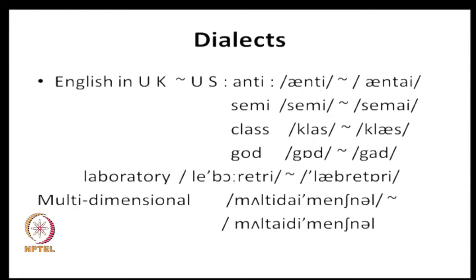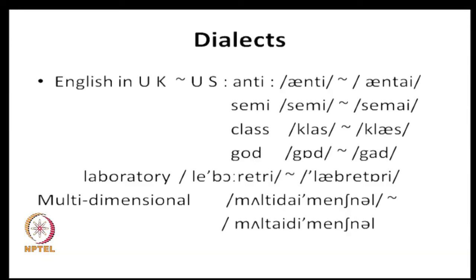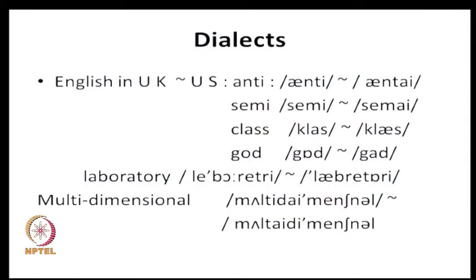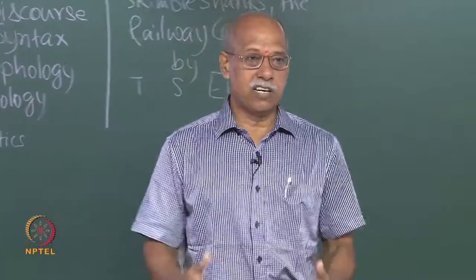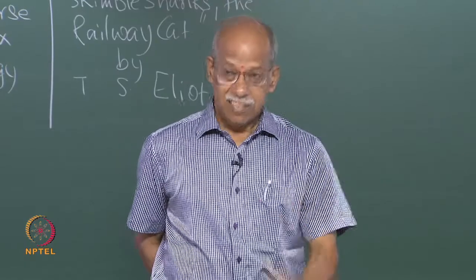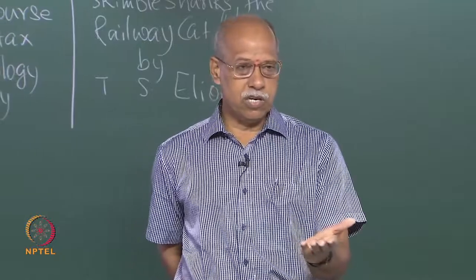Dialects: is it the same English spoken in the US and the UK? Look at pronunciation. In the UK, 'anti' is pronounced as 'anti', but in the US it is 'anti'. 'Semi' in the UK is 'semi', but in the US it is 'semi'. 'Class' in the UK is 'class' — long vowel — but in the US it is 'class'. 'God' in the UK is 'God', but in the US the jaw opens wider: 'God'. These are dialectal differences.